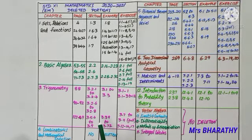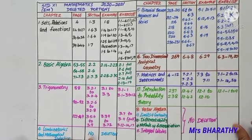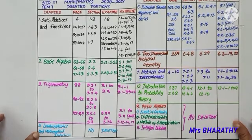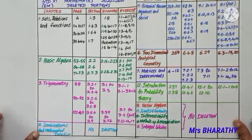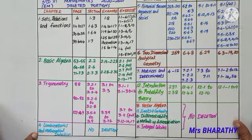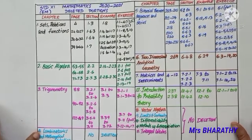From exercise 3.7 to 3.11, all the five exercises are deleted. Examples 3.39 to 3.72 are deleted. In objective type questions, exercise 3.12, question numbers 14 and 17 are deleted. Chapter 4: Combinatorics and Mathematical Induction - a new concept that is highlighted in Standard 11, so there is no deletion in this chapter.